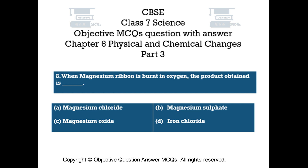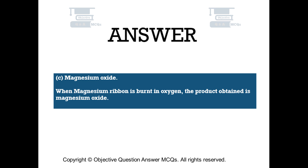Question number 8. When magnesium ribbon is burned in oxygen, the product obtained is: Option A magnesium chloride, Option B magnesium sulfate, Option C magnesium oxide, Option D iron chloride. The right answer is Option C — magnesium oxide. When magnesium ribbon is burnt in oxygen, the product obtained is magnesium oxide.